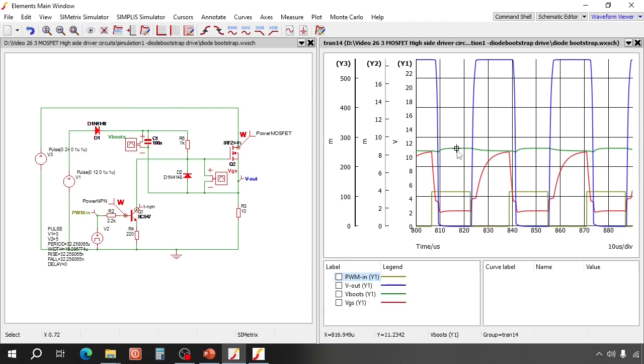Here you see that the bootstrap voltage is less than 12V because you lose some voltage in the diode. Also there is quite some ripple. But the voltage is more than 10V which is perfectly okay to drive the MOSFET. You can reduce the ripple by using 1µF for this capacitor, but it will not affect the performance much. Now let's zoom in on the MOSFET switch off.